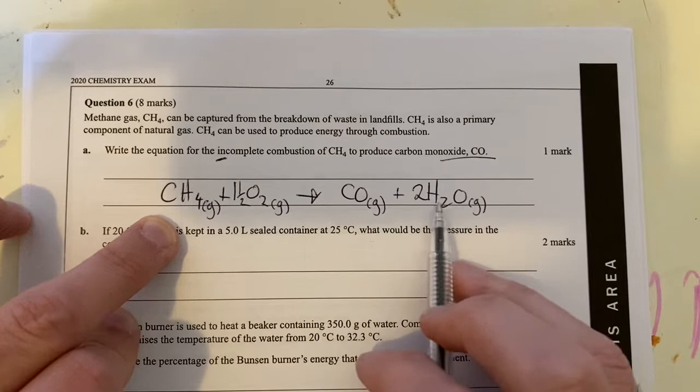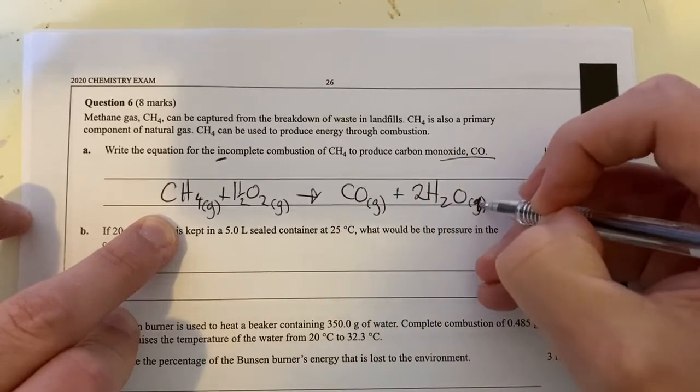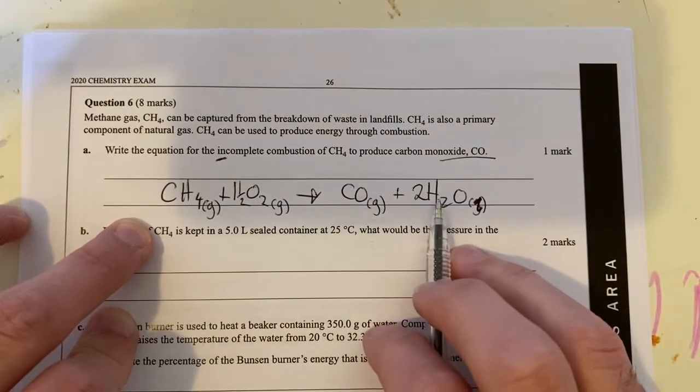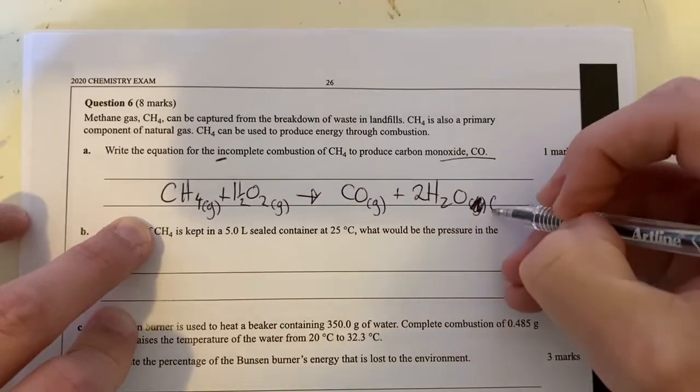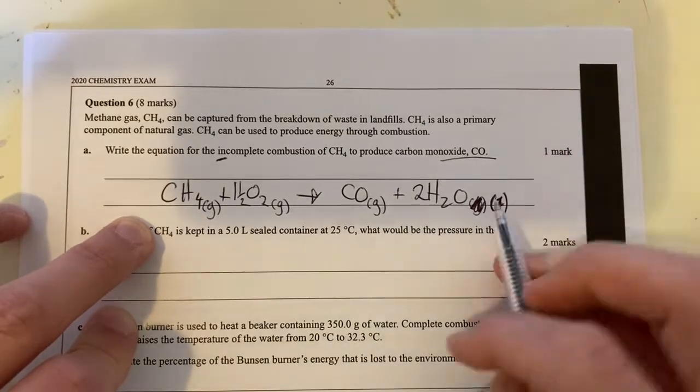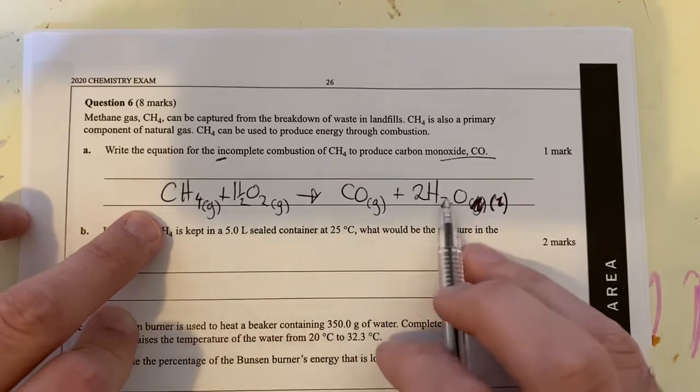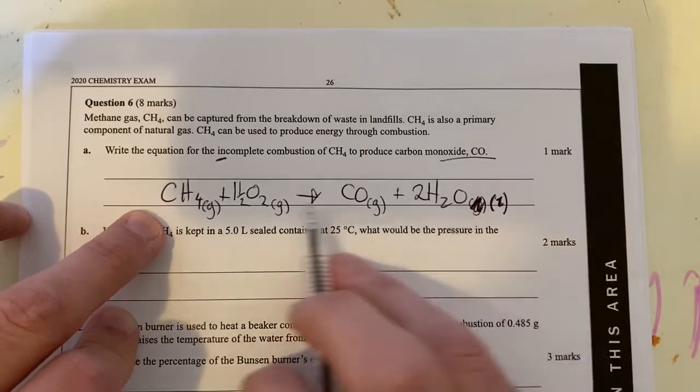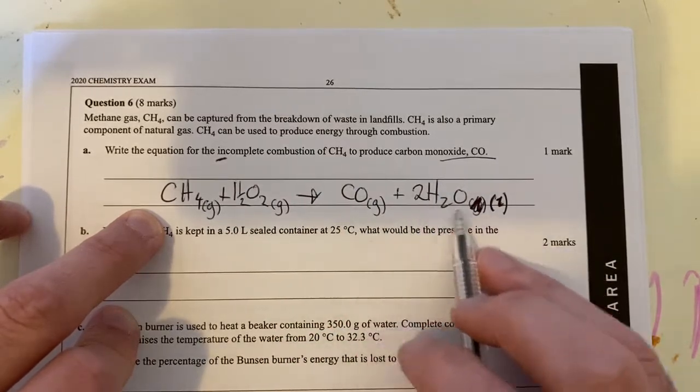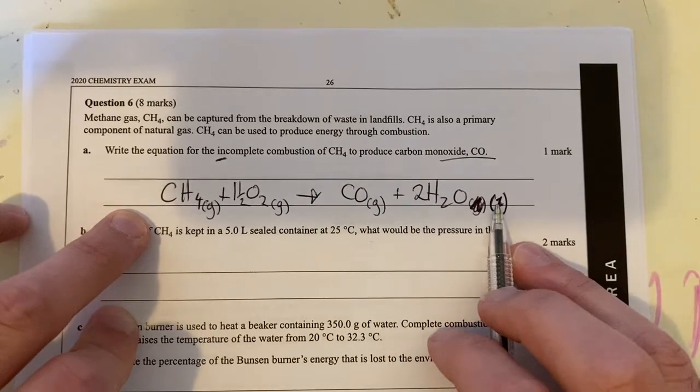Sometimes people will put this as a liquid, which it should be. Gas would be if the state's hot water. Generally, we write water as liquid. So I'm actually going to write that properly as liquid because our information in our data book is all based around standard laboratory conditions, which is 25 degrees Celsius, where water is a liquid. Some people argue that water here should be a gas because it's a combustion reaction producing a lot of heat and vaporizing the water. But we'll just talk about water being liquid for now anyway, and we'll move on.